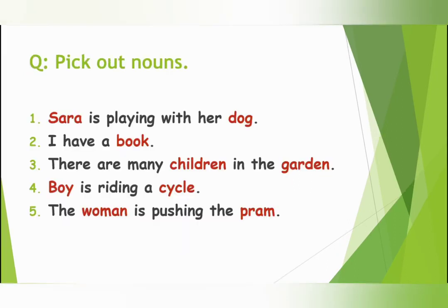Okay dear students, now pick out the nouns. Look at the first sentence: Sarah is playing with her dog. Sarah is the name of a girl and dog is the name of an animal. So Sarah and dog are naming words. Next: I have a book. Is there any naming word? Yes, book is a naming word. Next: There are many children in the garden. Children and garden are naming words.